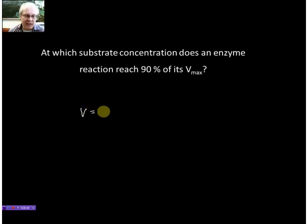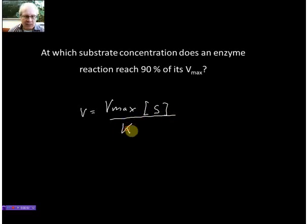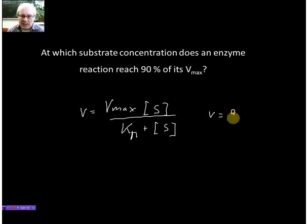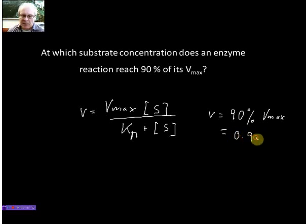We have got V — that's the rate — equals Vmax times the substrate concentration divided by Km plus the substrate concentration. That's our equation for the irreversible Michaelis-Menten equation. And what we know is that we want to evaluate the substrate concentration when this rate of the reaction is 90% of Vmax. So we know that V equals 90% Vmax, which I can also write as 0.9 times Vmax. And that is basically all we need to know.